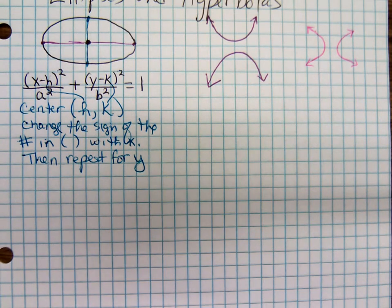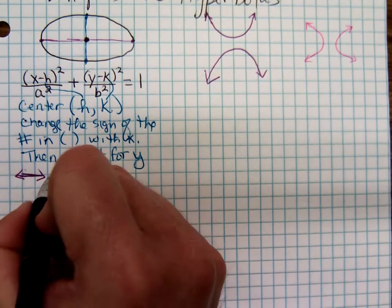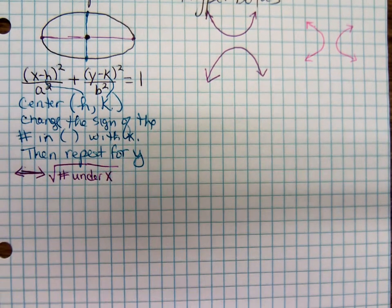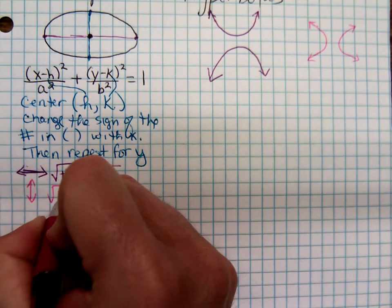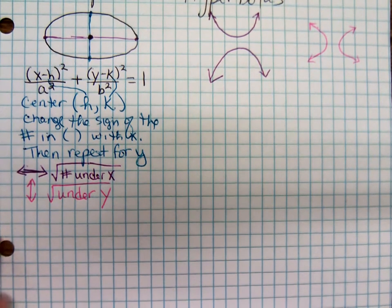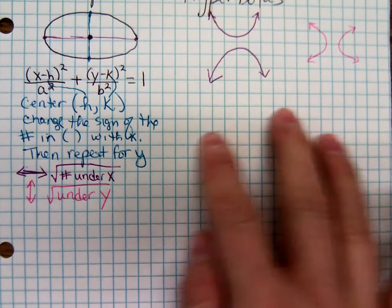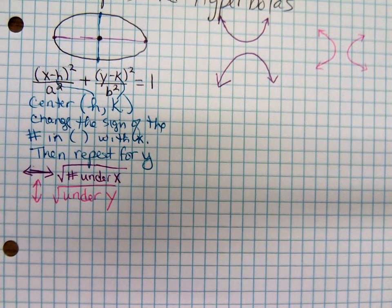Then we're going to be moving left and right, up and down. To get that left-right movement, we'll move left and right from the center the square root of the number under x. And then move up and down the square root of the number under y. Right now I want to graph an ellipse.